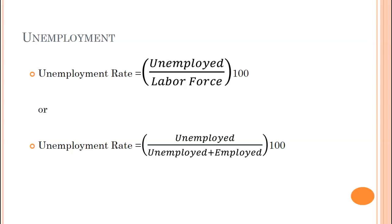Switching over to unemployment rates: the unemployment rate is the number of people unemployed divided by the labor force, times 100. An identical way to express this is unemployed divided by unemployed plus employed, since unemployed plus employed equals the labor force.